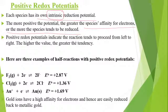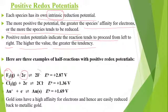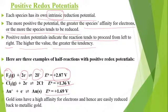Positive Reduction Potential indicates the direction tends to proceed from left to right — higher the value, greater the tendency. For example, some electrode potential values are listed. F2 (fluorine gas) gained two electrons to become fluoride ion, with E° standard electrode potential value of 2.87 V. Chlorine's value is 1.36. Gold gained an electron to return to neutral state with a value of 1.69.